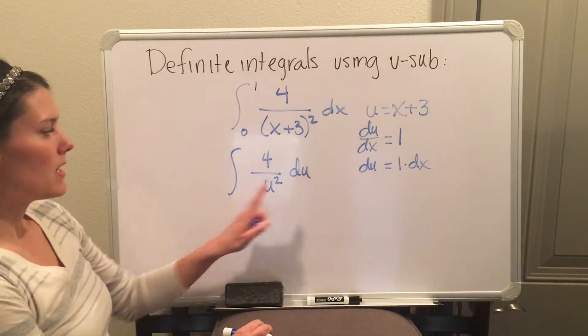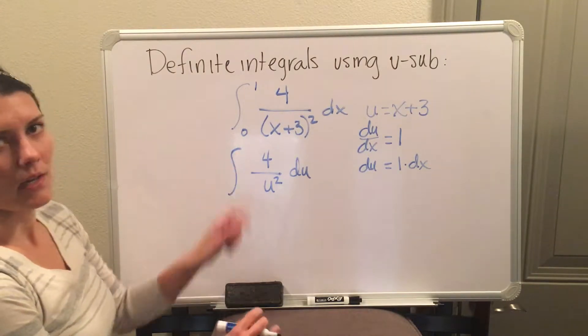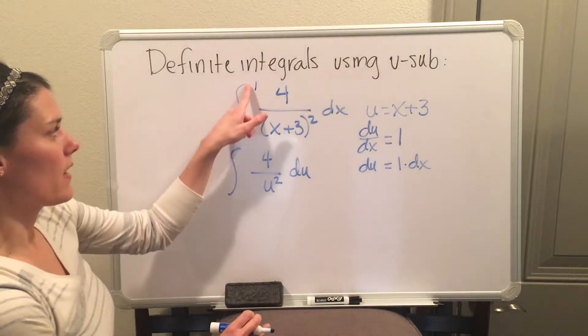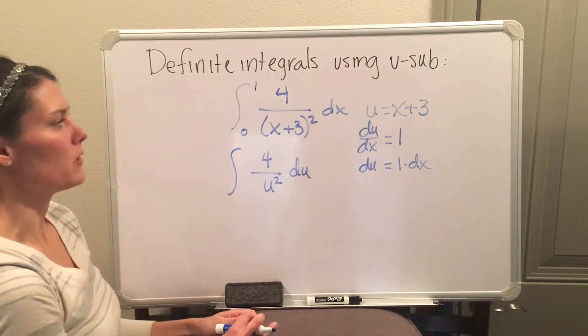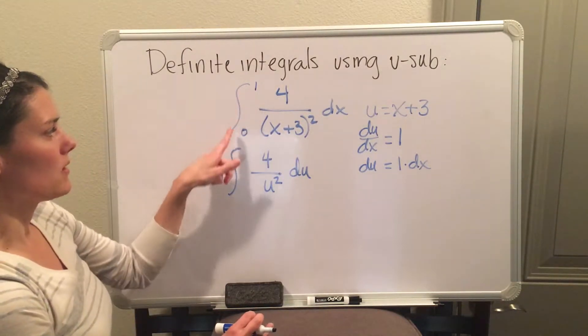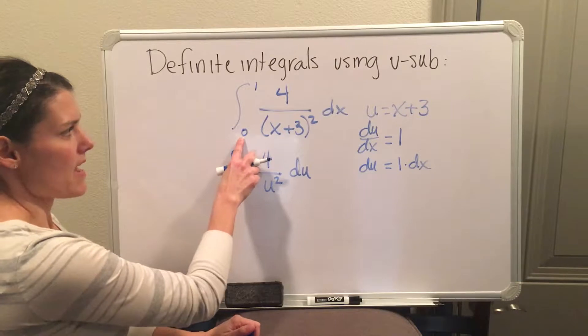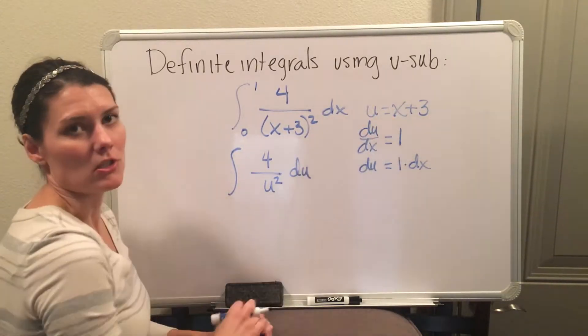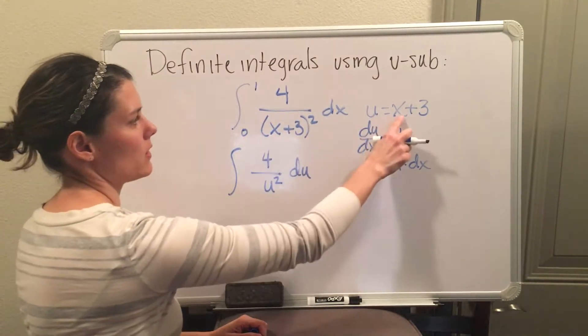But at this step right here, do not put 0 to 1 on the interval because that is wrong. These are in terms of x, and this is now in terms of u. So to get these in terms of u, you're going to take the a and you're going to go plug it into your u equation.